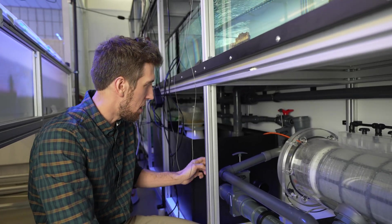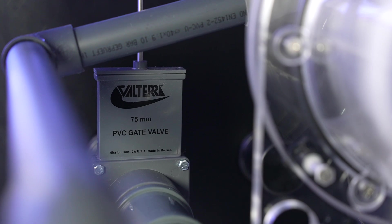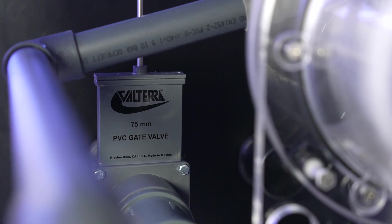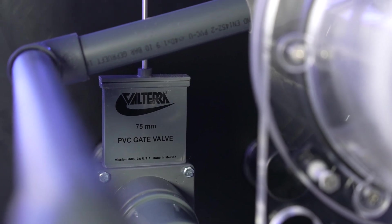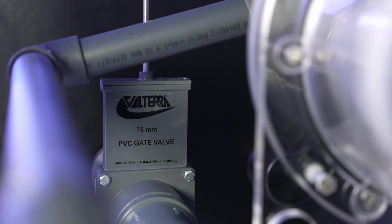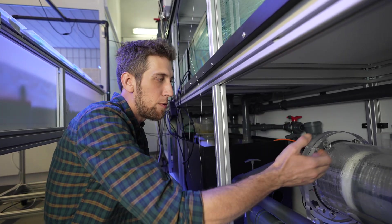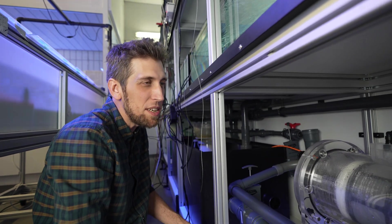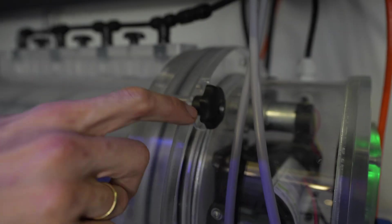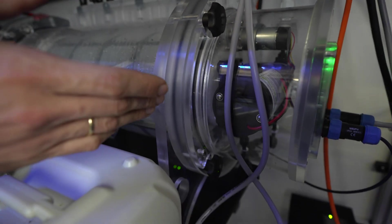The way we connected it to our system is with these valves. So that gives us the option to close these valves and then either replace the mesh if we want to put in a finer mesh or a wider mesh or for whatever reason we need to open that thing. It can be done easily by opening these screws and then you can take off the front part.